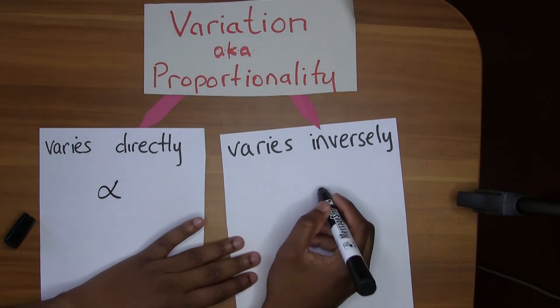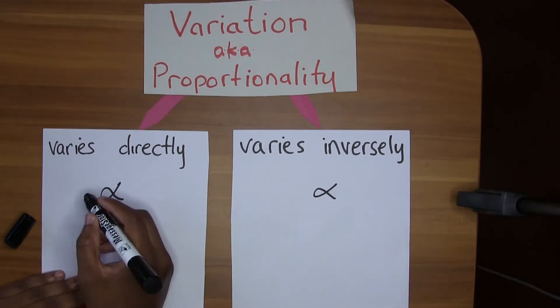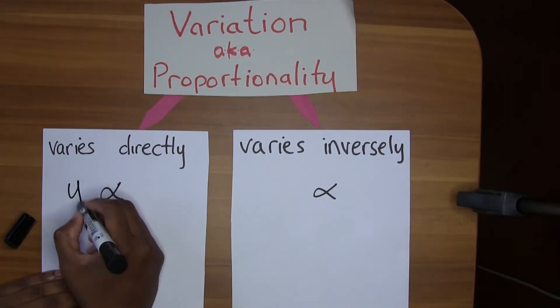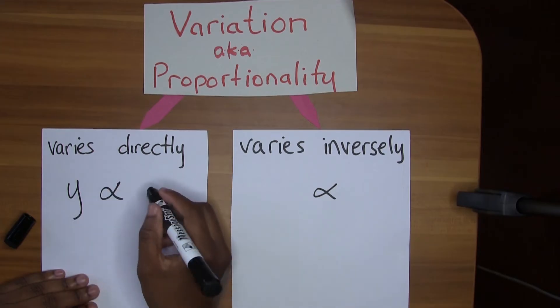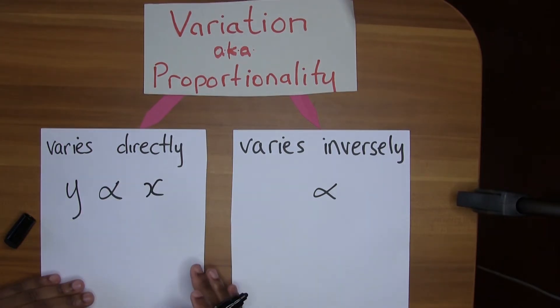Varies directly: this is the symbol for proportional. Y is the first thing we want to look at — y varies directly to x. It's a multiplicative relationship, so as y goes up by 2, x goes up by 2 as well. If y was on 3, x goes up to 6; if y was on 4, x goes up to 8.